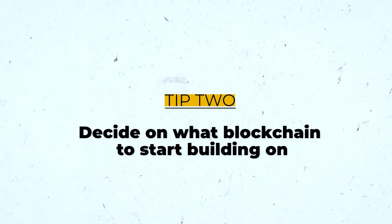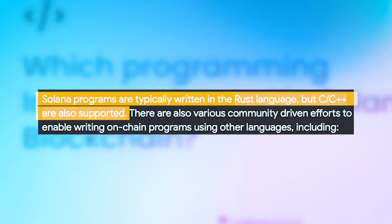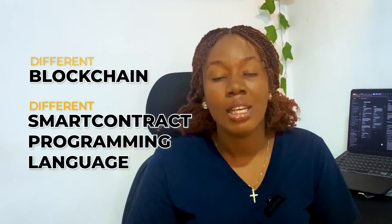After learning the basics of web3, the next step is to decide what blockchain you want to build on. There are several blockchains and each has different development languages and toolkits. For example, under Ethereum, you write Solidity for smart contracts; for Solana, you use Rust; for Flow blockchain, you use Cadence. Different blockchains have different smart contract programming languages, different tools, and different consensus mechanisms, so you need to decide which blockchain you want to work on.